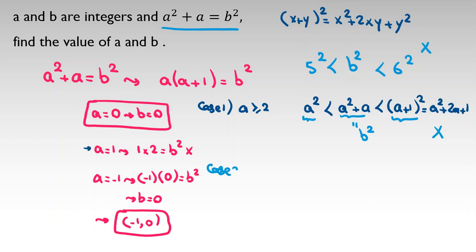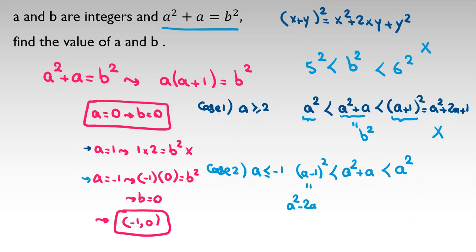Case two: a is negative. Since we've already checked a=-1, we consider a less than or equal to -2. Now a squared plus a is less than a squared because a is negative, and it is also greater than or equal to (a minus one) squared. By the identity with x=a and y=-1, we get a squared minus two a plus one.